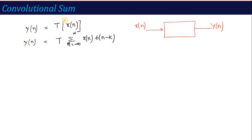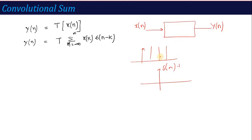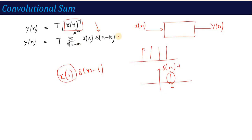Just as we represented X(t) in terms of impulses, the same applies here. If I have some X(n) signal, I can multiply this X(n) signal with delta(n minus k). In the continuous case we represented it as X(tau) times delta(t minus tau). In the same way, we can represent any discrete time signal, any given signal, as X(k) multiplied by delta(n minus k). For example, if k equals 1, then it becomes X(1) times delta(n minus 1). Adding the summation over all instances gives summation k equals minus infinity to infinity of X(k) times delta(n minus k).